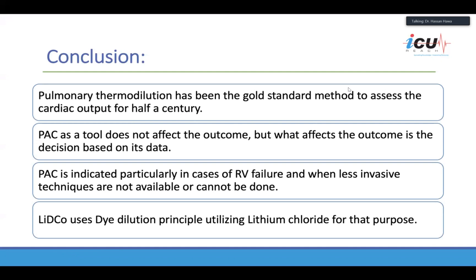In conclusion, pulmonary thermodilution has been the gold standard method to assess cardiac output for half a century. The PA catheter as a tool does not affect the outcome — what affects outcome is the decision based on its data. Studies have shown many intensivists were unable to interpret PA catheter data appropriately, leading to wrong hemodynamic decisions. The PA catheter is indicated mainly in right ventricular failure and when less invasive techniques are not available or cannot be used.